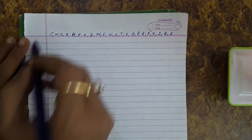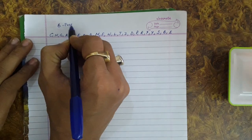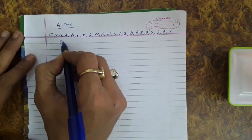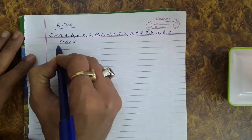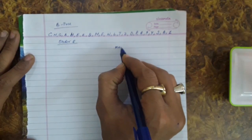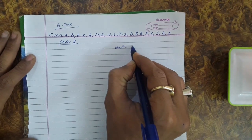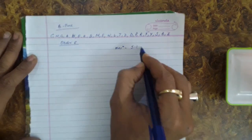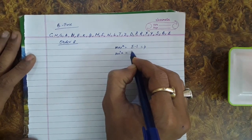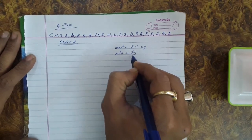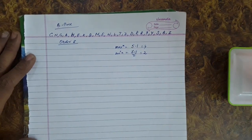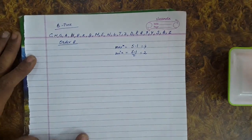Let us take another example of the B-tree and build a B-tree with insertion of the following keys. The order is 5, so the maximum number of keys will be n minus 1, which is 4, and the minimum number of keys will be ceil((5-1)/2) which is 2. Now let us insert these keys.